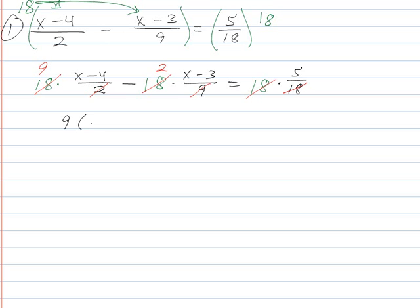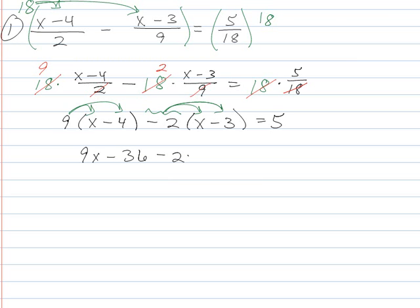So I've got 9, now make sure you use your parentheses. This would be 9 times x minus 4, minus 2 times x minus 3, and that needs to equal 5. Next step, distribute the 9 across and distribute the negative 2 across. Be careful doing this, because this is where a lot of mistakes can happen. So I've got 9x minus 36 minus 2x plus 6 equals 5.